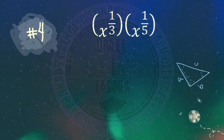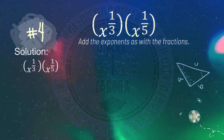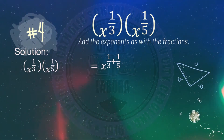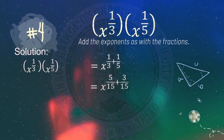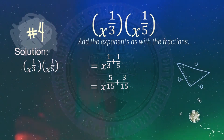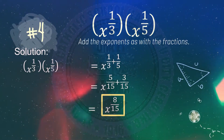Number four: x raised to 1 third times x raised to 1 fifth. Add the exponents as if adding fractions. Copy the base x, then compute 1 third plus 1 fifth. Since they don't share the same denominator, find the LCD of 3 and 5, which is 15. So 1 third becomes 5 over 15 and 1 fifth becomes 3 over 15. Adding gives 8 over 15. Since 8 over 15 cannot be simplified, the final answer is x raised to 8 over 15.